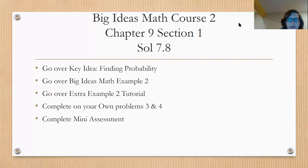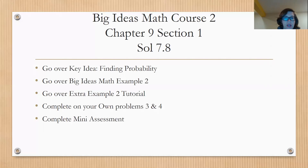Hopefully the tutorial helped. We've gone over the key idea of finding probability, Big Ideas example two, and the tutorial. Now we're going to complete a couple of on-your-own problems — numbers three and four together — and then complete a mini assessment.